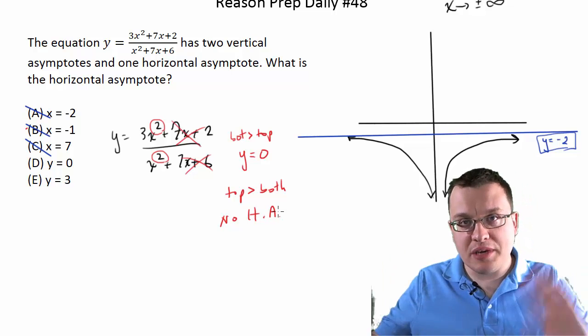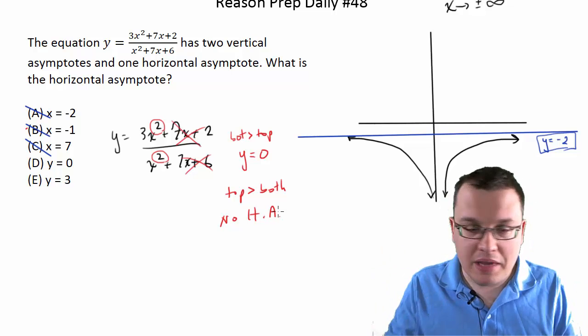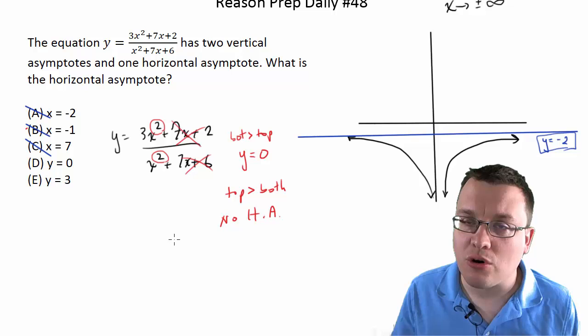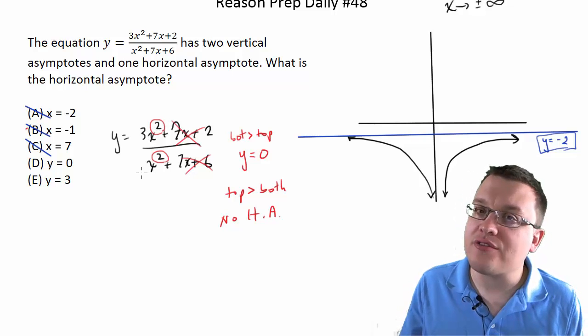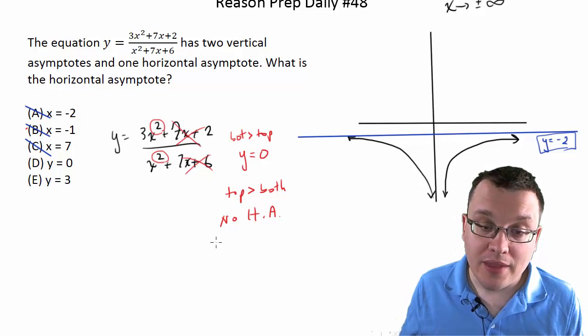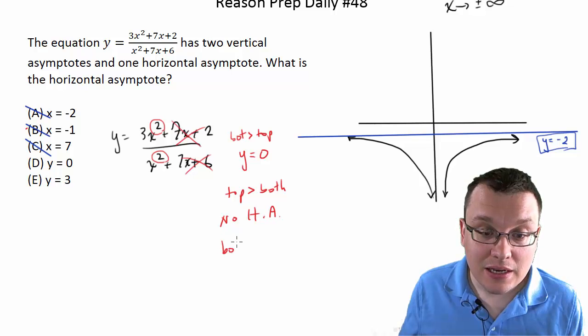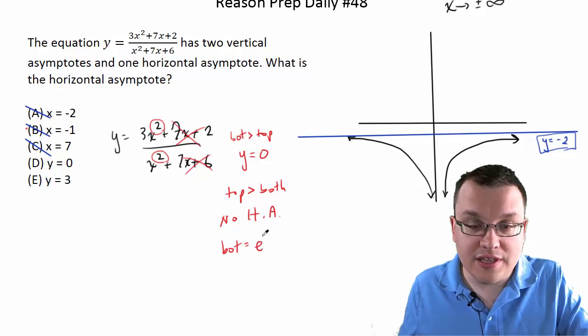In other words, the function goes to either infinity or negative infinity as the case may be. But there's no horizontal asymptote if the exponent on top is bigger than the exponent on the bottom. If, as in this case, the exponent on the bottom equals the exponent on the top,